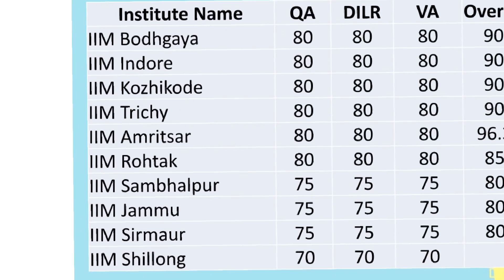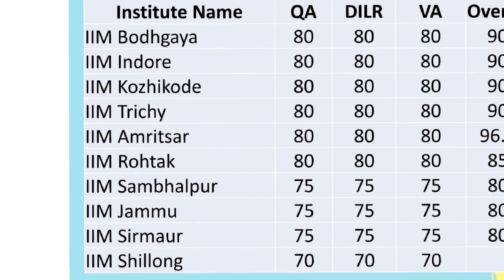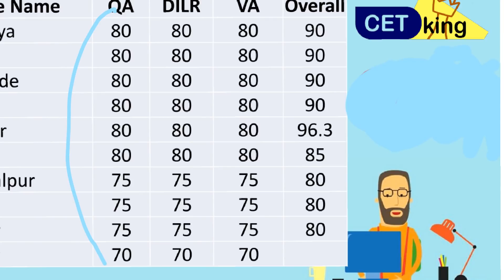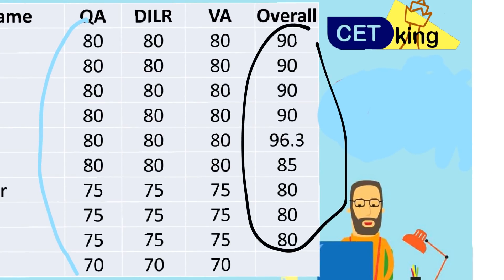There are 20 IIMs. In this slide I have listed 10 of the B-schools. Please pause the video and look at the cut-offs here. Most of them have a 75 to 80 percentile cut-off for the quant section. Similarly for the DI and Logic section it's 80, 75, 80, 75 — and overall 90 percentile. But this is the bare minimum required to get a call.